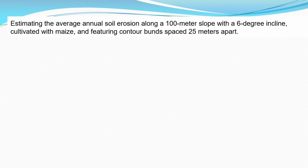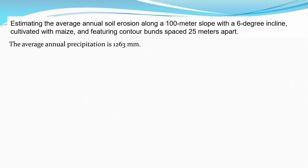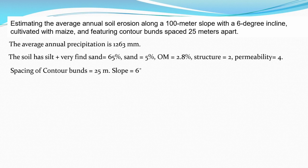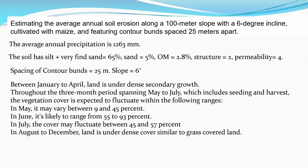Comprehensive problem: Estimate average annual soil erosion along a 100-meter slope with a 6-degree incline, cultivated with maize, featuring contour bunds spaced 25 meters apart. Average annual precipitation is 1263 mm. The soil has silt plus very fine sand = 65%, sand = 5%, organic matter = 2.8%, structural class 2, and permeability class 4. The slope of 6 degrees must be converted to percentage for the topographic factor equation.